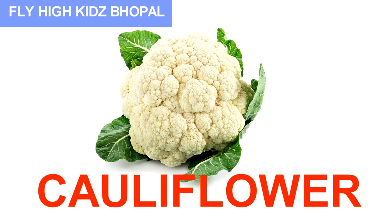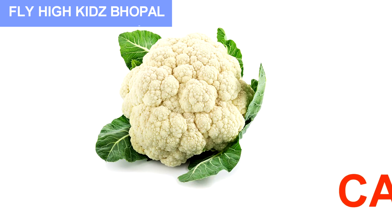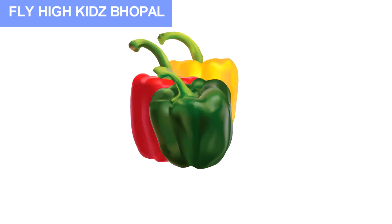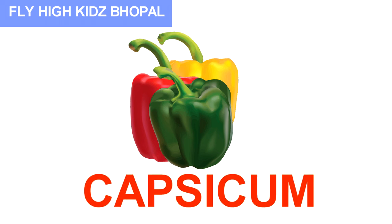C-A-U-L-I-F-L-O-W-E-R, cauliflower. Cauliflower means full gobi. C-A-B-B-A-G-E, cabbage. Cabbage means patta gobi. C-A-P-S-I-C-U-M, capsicum. Capsicum means shimla mirch.